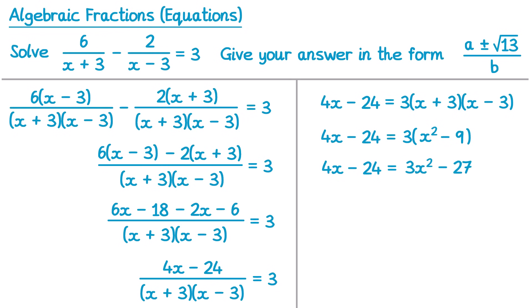So you can see we do have a quadratic, and we need to get one of the sides equal to 0. Once again I'm going to make the left hand side equal to 0. To do this I would need to subtract 4x and then add 24 to both sides. So if I do that on the left I get 0, and on the right hand side I get 3x squared unchanged, then subtract 4x — and there's no x term already there so that's just negative 4x — and then add 24 to negative 27, which gives us negative 3.